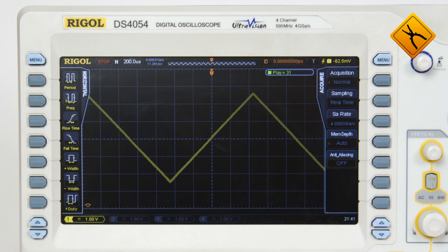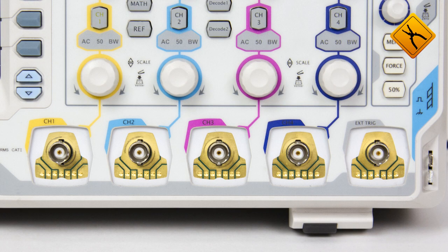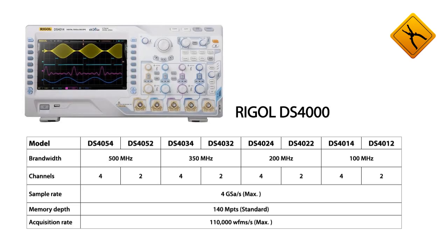The series is represented by devices with a bandwidth from 100 to 500 MHz, 2 or 4 channels, and a rate of 4 gigasamples.